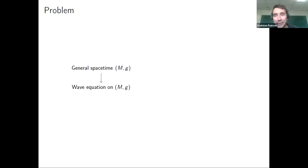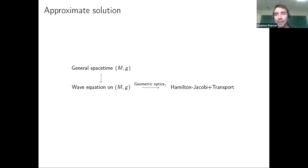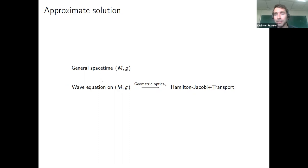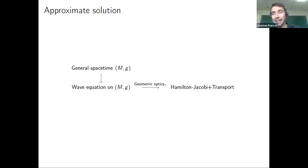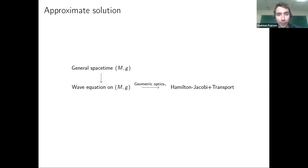If the wavelengths are short with respect to the other scales in your problem, you could first try to get an intuition through a geometrical optics approximation, which to leading order gives you some Hamilton-Jacobi equation for the null geodesics of the spacetime. In addition you get transport equations along this null geodesic for sub-leading orders, or perhaps how the spin evolves.